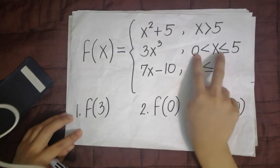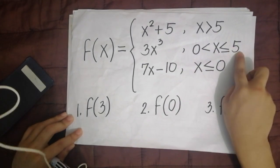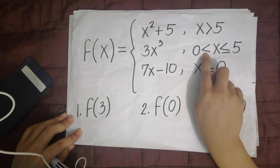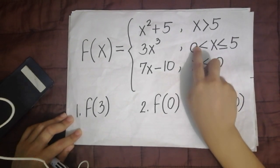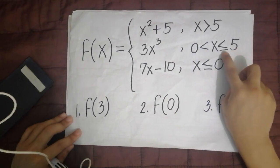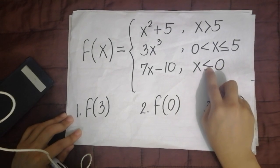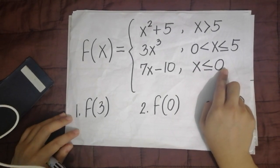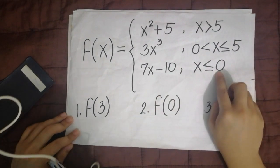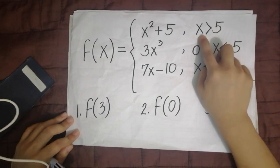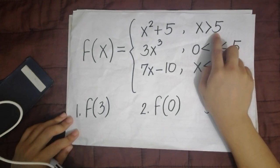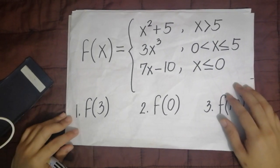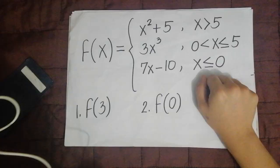So, you need to understand this. When you see a restriction like that, it means from this number to that number — for example, from 0 to 5. But you need to know whether 0 is included or not. To find out, look at the symbol beside it: if there is an equal sign, it is included; if there is no equal sign, it is not included. For x less than or equal to 0: 0 is included because of the equal sign, and the values go negative 1, negative 2, negative 3, negative 4 going down. For x greater than 5: 5 is not included since there is no equal sign, so you start with 6, 7, 8, 9, 10, to positive infinity. That's it. Thank you.